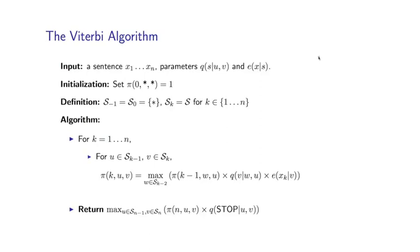Here is the Viterbi algorithm which puts these ideas together. The input to the algorithm is a sequence of words x1, x2, up to xn. The output is going to be the maximum value for any sequence of tags, y1 through yn plus 1 of p x1 through xn, y1 through yn plus 1.